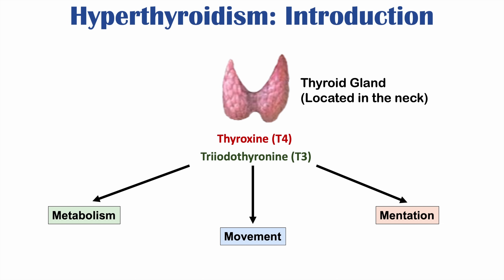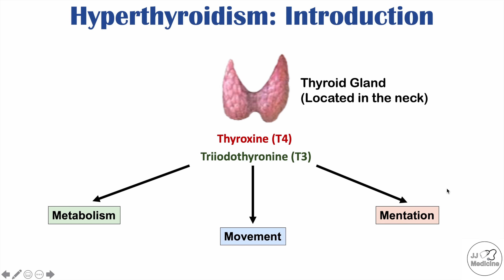The way to remember what thyroid hormones do is by using the three M's: one M for metabolism, another M for movement, and another M for mentation. If there is too much or too little thyroid hormone, we'll see problems in each of these three domains. In hyperthyroidism, there are higher levels of thyroid hormones, leading to increased activation in all three domains.